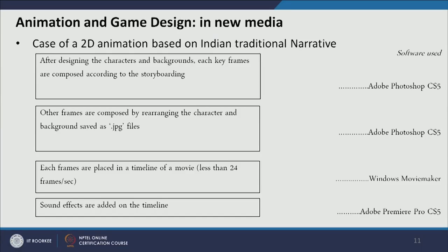In 2D animation, after designing characters and backgrounds, each key frame is composed according to the storyboard — done in Photoshop. Frames are composed by iterating the character and background. Since this was a stop motion animation with less than 24 frames per second, Photoshop was sufficient; otherwise other software would be needed. Sound effects are then merged with the timeline.